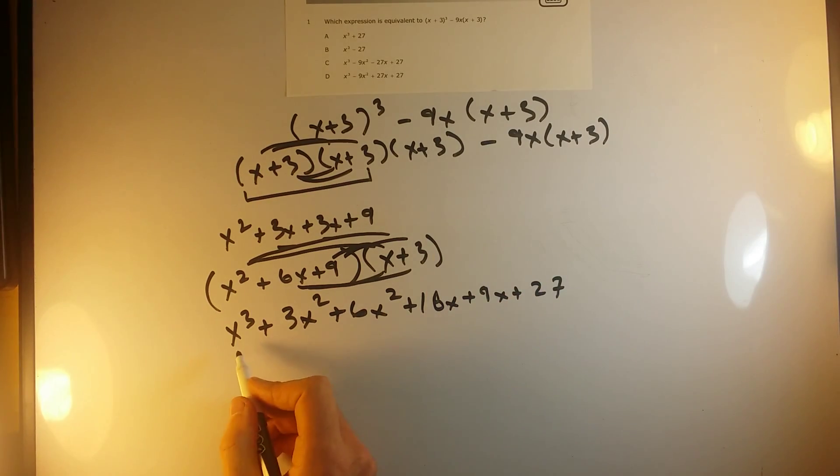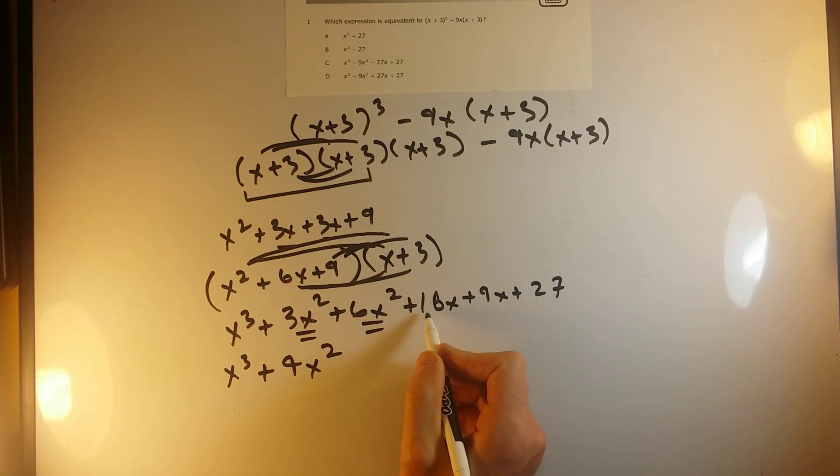Okay, combine all of my like terms. So x cubed just comes down. 3x squared and 6x squared, these are both like terms, so I'll just add up my coefficients. This gives me 9x squared. 18x plus 9x, these guys are like terms, so this will give me 18 plus 9 gives me 27x. And then just bring down my 27.